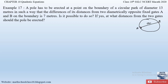A pole has to be erected at a point on the circular park such that the difference of its distances from the two diametrically opposite gates is 7 meters. So the difference between the distance from gate A to the pole and from gate B to the pole should be 7 meters. We need to find the distances, so let point P be where the pole is erected. We need to find AP and BP.